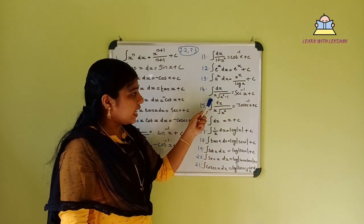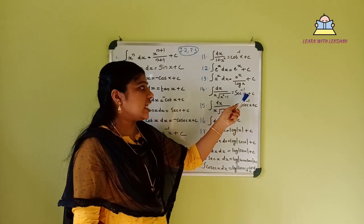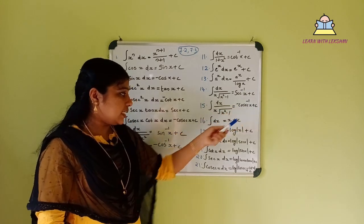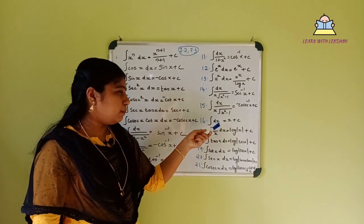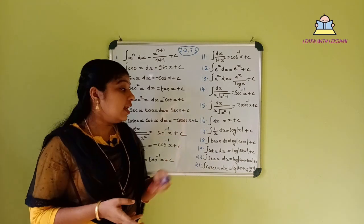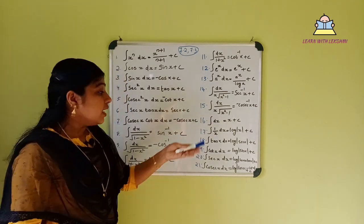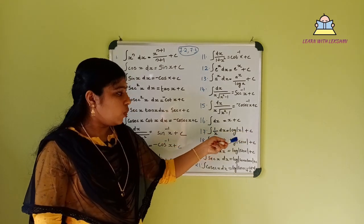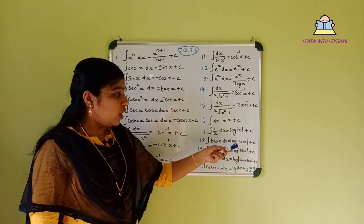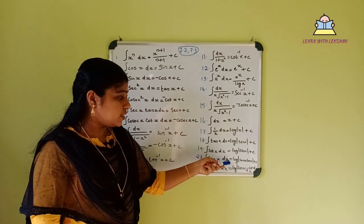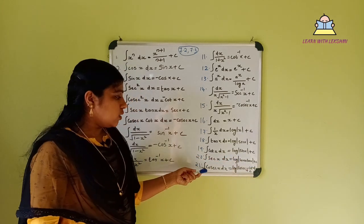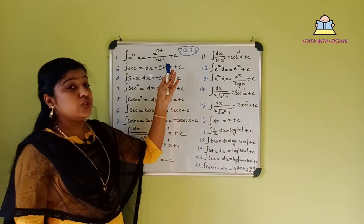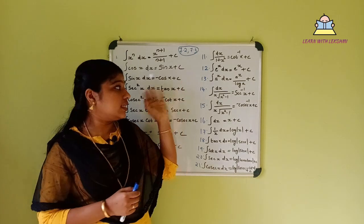Integral of dx divided by (x² minus a²) gives a logarithmic form plus c. It is also important to know: integral of tan x dx is log|sec x| plus c, integral of cot x dx is log|sin x| plus c, integral of sec x dx is log|sec x plus tan x| plus c, and integral of cosec x dx is log|cosec x minus cot x| plus c. Sections 7.2 and 7.3 make main use of these equations.